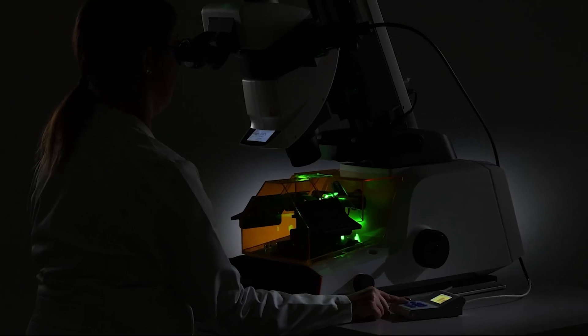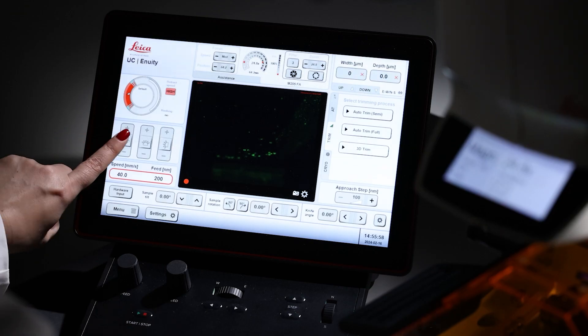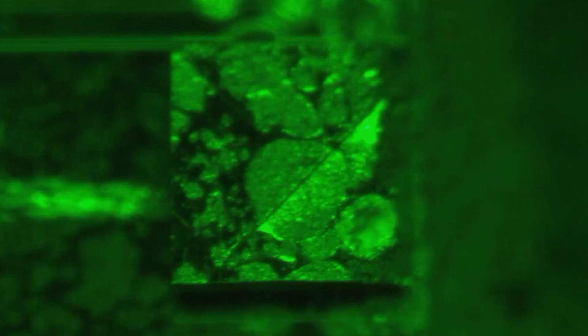Also, UC Inuity is now able to detect fluorescence. You can easily monitor your region of interest via detecting fluorescence in your sample block during room temperature sectioning and cryo sectioning.